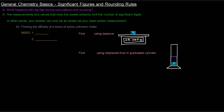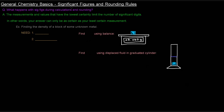We're going to continue our discussion of significant figures and discuss the rounding rules as well as exact numbers. One question is: what happens with sig figs when it comes to calculations and rounding? In calculations you'll have multiple numbers, and maybe these numbers have different numbers of significant figures. What happens?